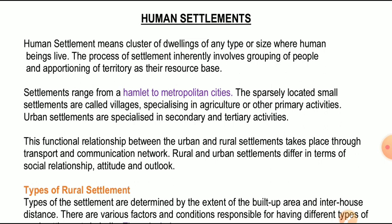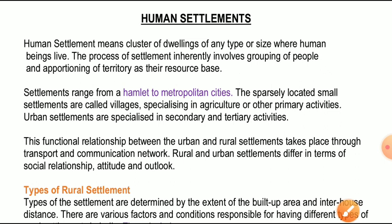Settlements range from hamlet to metropolitan cities. जो settlements होते हैं, ये छोटे-छोटे इक्के-दुक्के घरों से लेकर बड़े-बड़े शहरों तक के हो सकते हैं। The sparsely located small settlements are called villages, specializing in agriculture or other primary activities. Urban settlements are specialized in secondary and tertiary activities. जो सबसे छोटी इकाई रहवास की होती है वो गाँव होती है, जो कृषि प्रधान होते हैं या जिनमें अन्य प्राथमिक क्रियाएं की जाती हैं। जो शहरी बस्तियां होती हैं, ये द्वितीयक और तृतीयक व्यवसायों में संलग्न होती हैं।